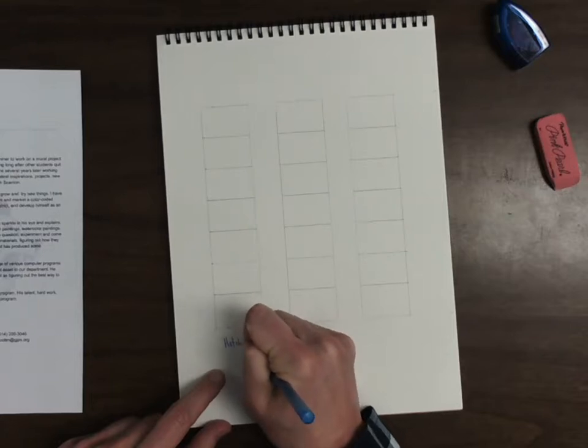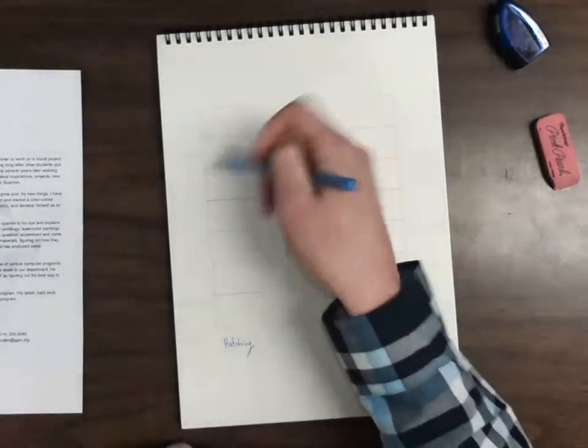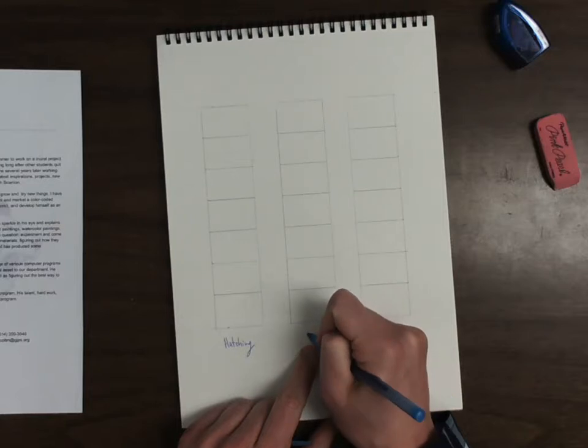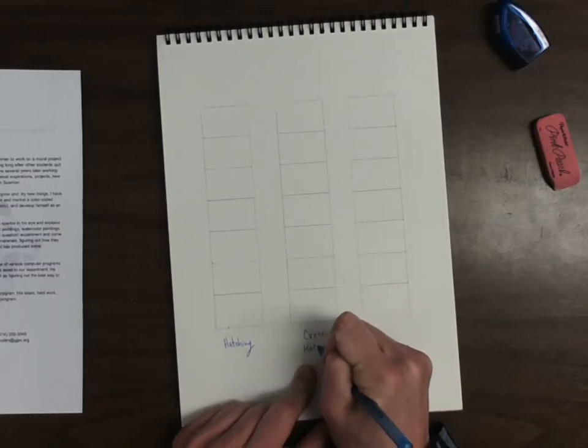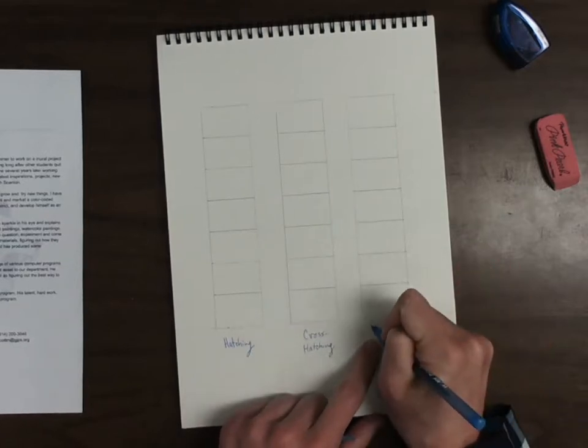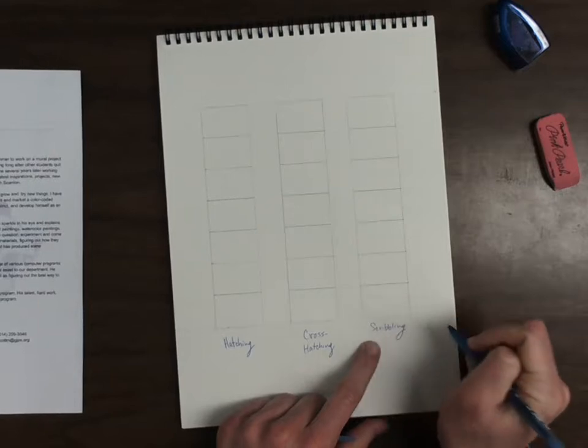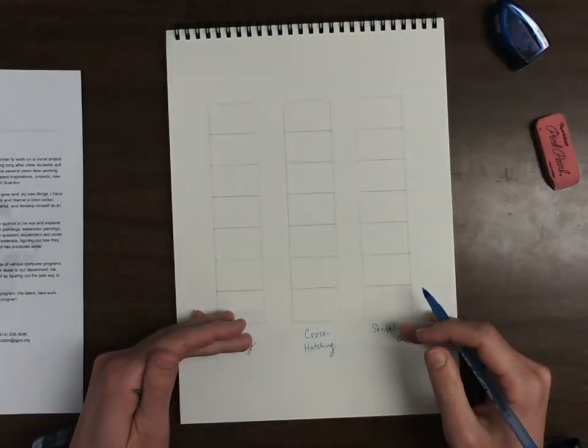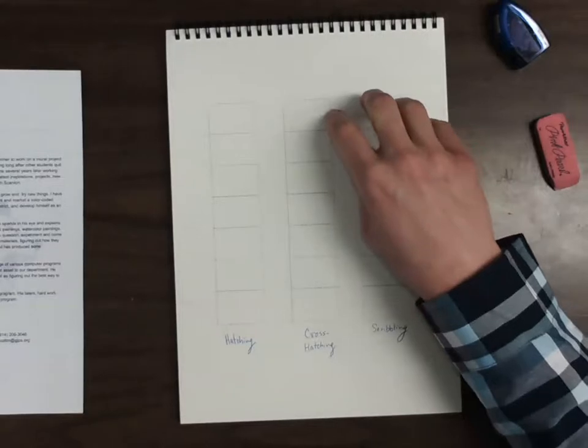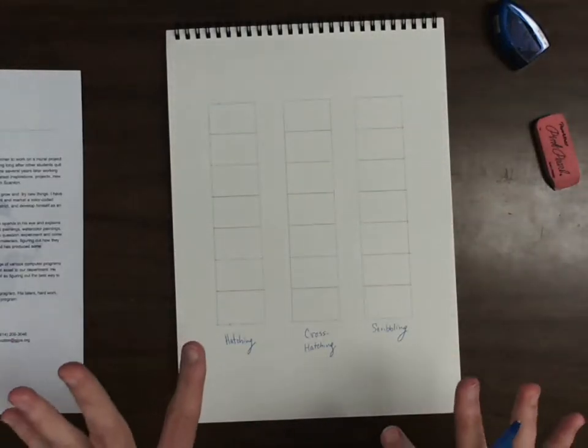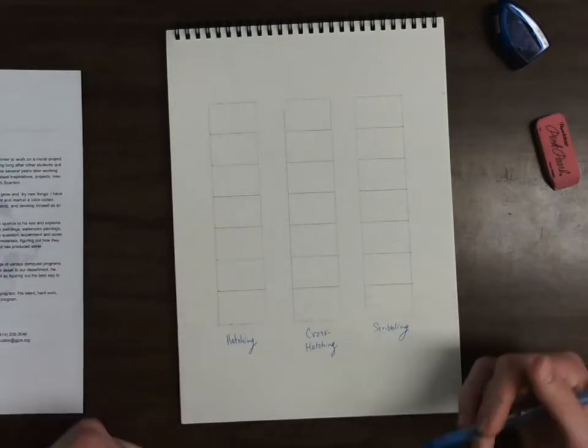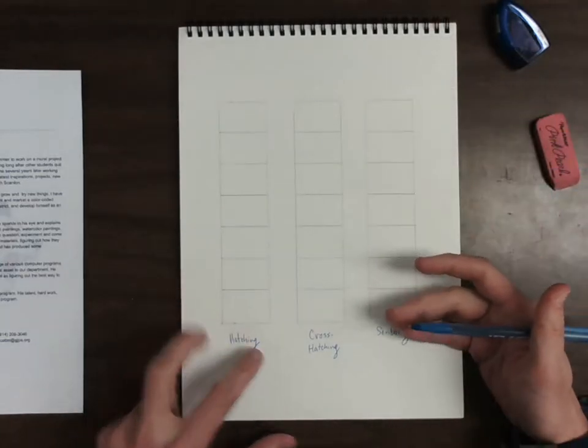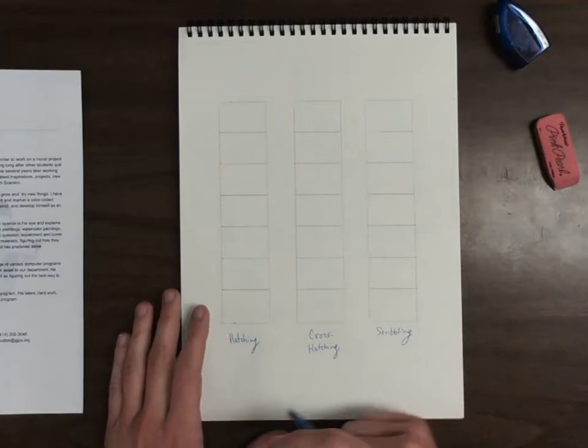If we remember hatching from drawing one, that is a mark that is continually the same at the same angle and direction. Now we're going to work our way from light to dark, just like we did with our value scales in drawing one. The top of our boxes was white. We're going to add just a little bit of value, and then we're going to work down to super dark and very aggressive in value.